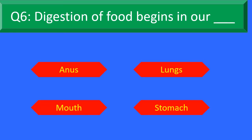Digestion of food begins in our — Option A: Anus, Option B: Lens, Option C: Mouth, and Option D: Stomach.